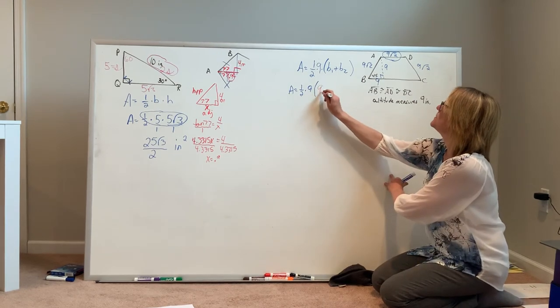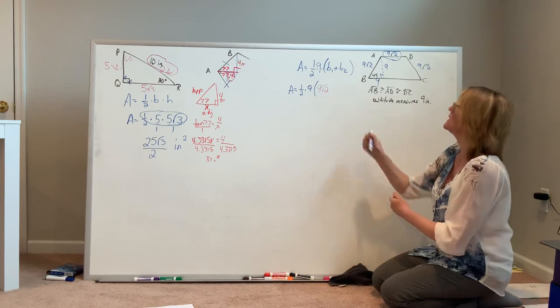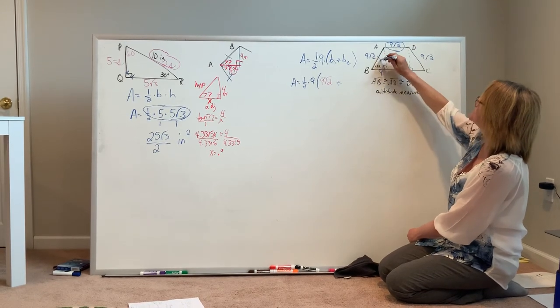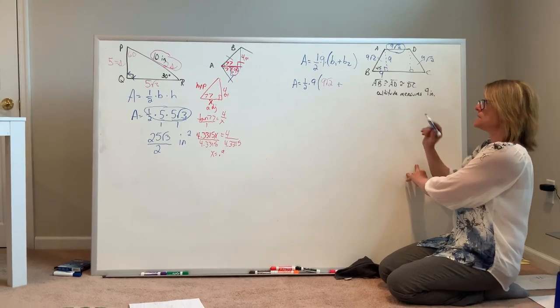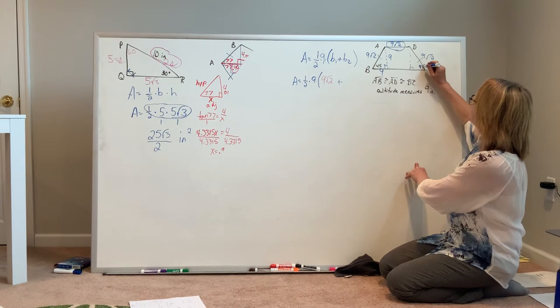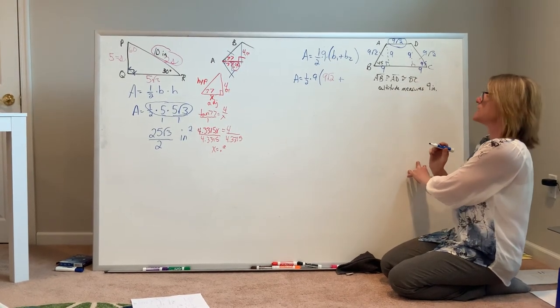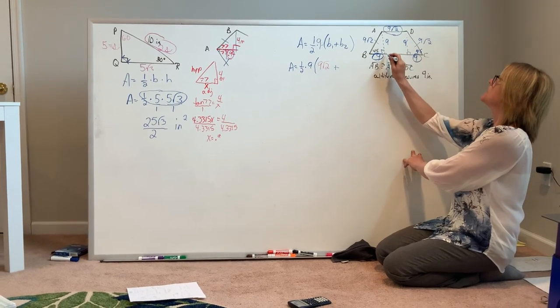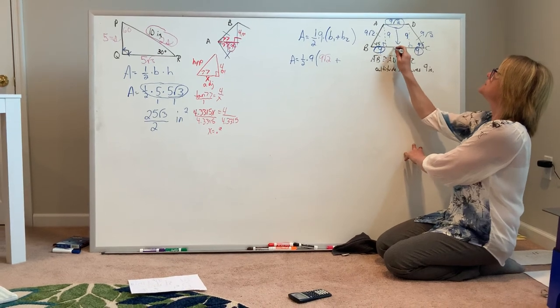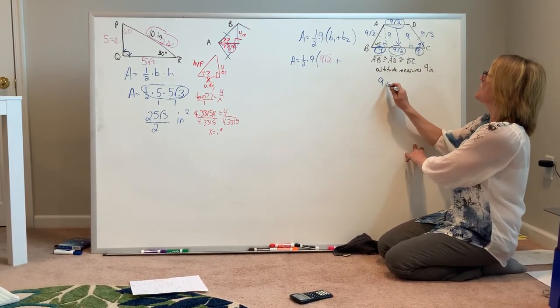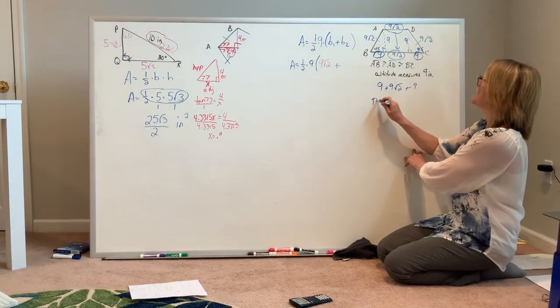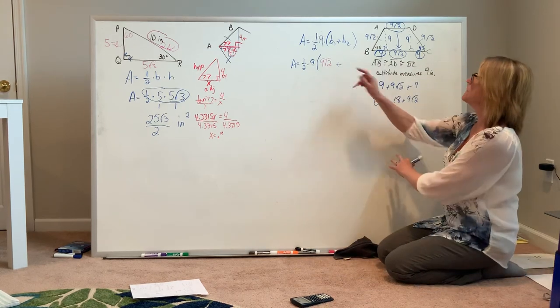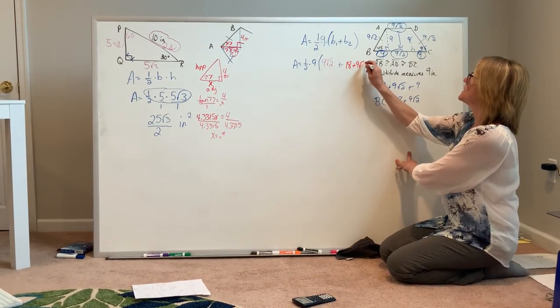We still need to find the length of that second base. For my second base, I'm also going to look at a right triangle. Because these two sides are congruent to each other, it's an isosceles trapezoid, which means my base angles are also congruent, and what I'm looking at is another little 45-45 triangle. I know that this base from B to C has a length of 9 here, it has a length of 9 here, and because this quadrilateral in the center is a rectangle, this piece is 9 square root of 2. When I combine all three of those pieces together, it gives me a length for BC of 18 plus 9 square root of 2. Back to my formula, B sub 2 is 18 plus 9 square root of 2.